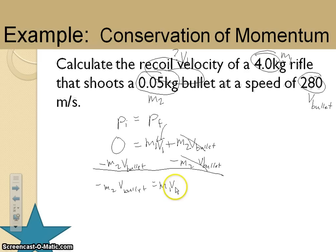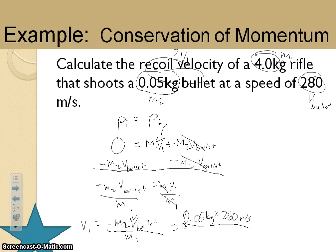In order to isolate my recoil velocity, I'm going to have to cancel out the mass of the rifle. So let me divide both sides by M1. It means that my recoil velocity is going to be equal to negative M2 V bullet divided by M1. So that's going to be equal to 0.05 kilograms times the velocity of my bullet divided by the mass of the rifle.